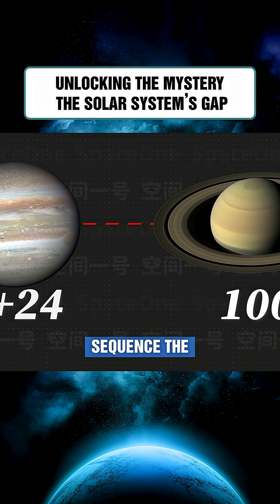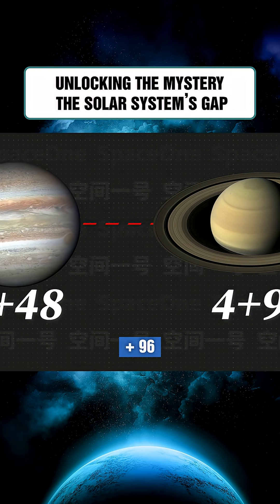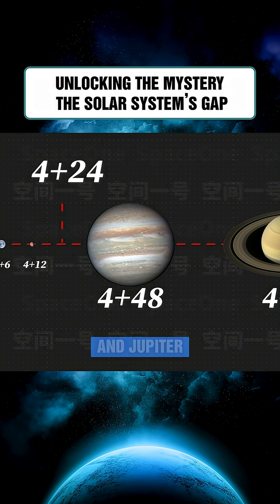Following that sequence, the next should be 4 plus 24, but in reality, it jumps straight to 4 plus 48 for Jupiter and 4 plus 96 for Saturn. That gap at 4 plus 24 raised a question: Was there an undiscovered planet between Mars and Jupiter?